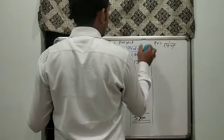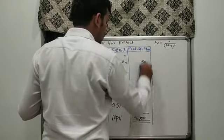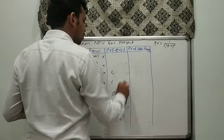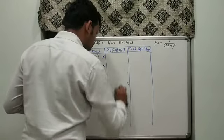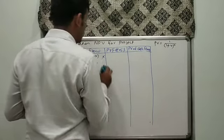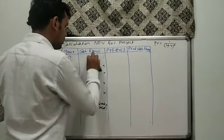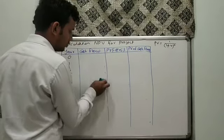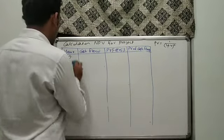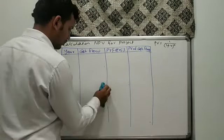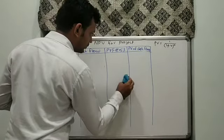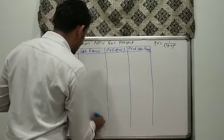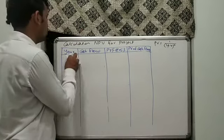Now we will move to Project Y. Calculation of NPV for Project Y. Two projects were given, both mutually exclusive. Hence we have to find NPV for both projects, and after that we are going to decide which project should be selected or rejected.